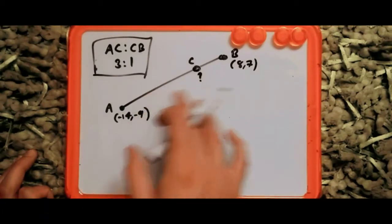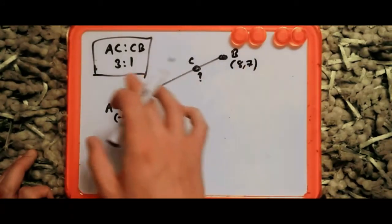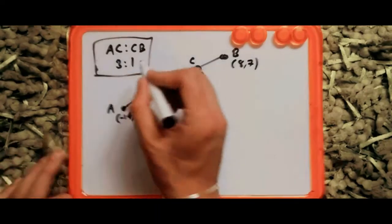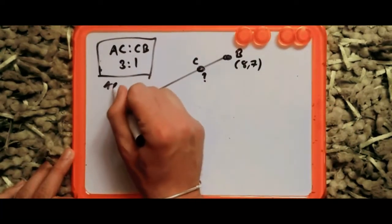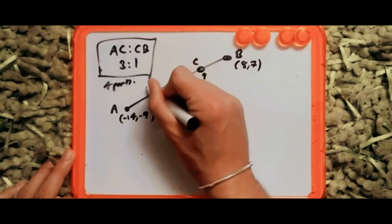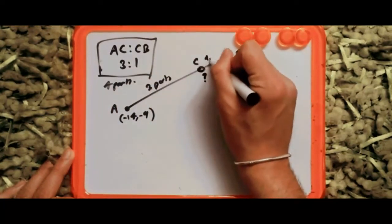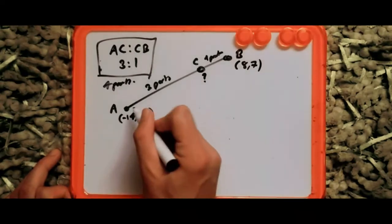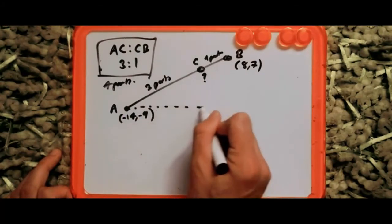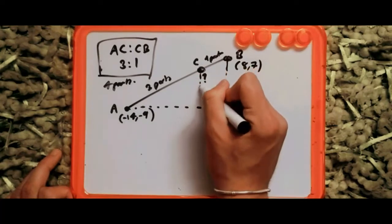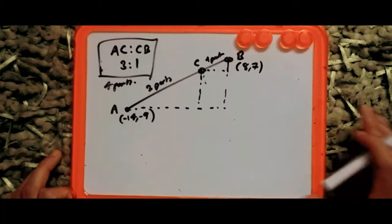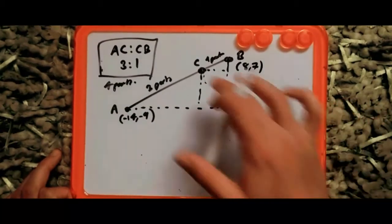So first things first, if you're familiar with ratios, you should know that 3 to 1 literally implies that there are four parts — three parts here and one part here. Another thing to notice is that we can use something called similar triangles. That is, if we build a triangle here and another triangle here, we can easily work out the position of these points.